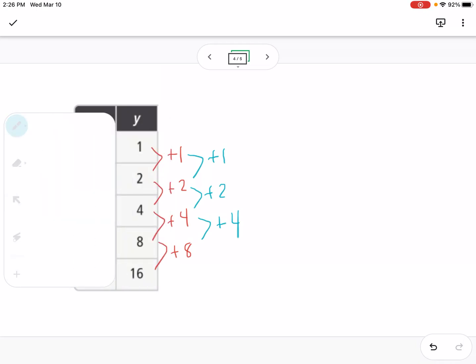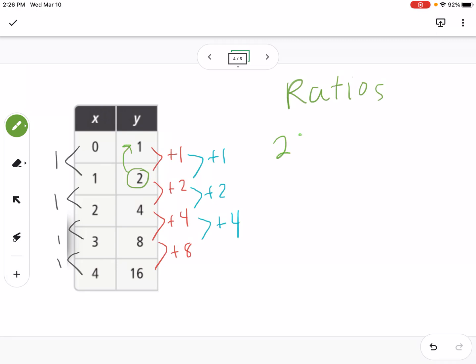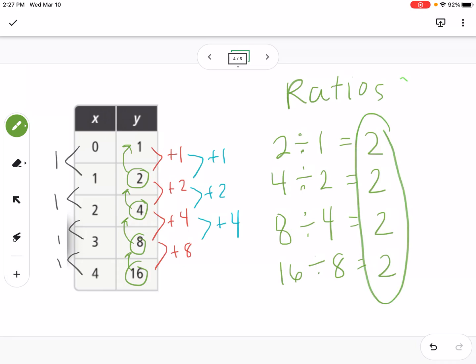So then the third thing I check for are the ratios constant. So the ratios you're going to take your later y and divide it by the earlier y. So we're going to say 2 divided by 1, that's 2. 4 divided by 2 is 2, 8 divided by 4 is 2, and 16 divided by 8, also 2. So the ratios in this case are constant. So if you have constant ratios, then this is exponential.